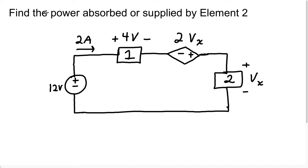This question says: find the power absorbed or supplied by element 2. When we look at this, element 2 is just a box. We don't know whether it is a source or whether it is a resistor. They give us the voltage, which they label Vx, and we know the current in this particular circuit is going to be 2 amps, because it is a series circuit.